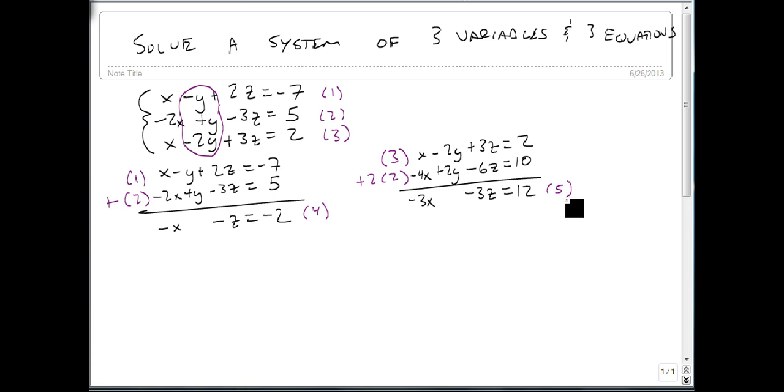In fact, if you look at equation 5, notice that minus 3 goes into all of these. So we can divide by minus 3 and get x plus z equals minus 4. Let's use this as our equation 5 instead.